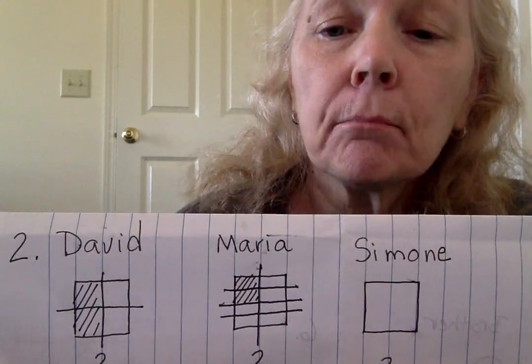And Simone has shaded two sixths. So I'm going to cut her index card into six equal pieces, and I'm going to shade two of those.